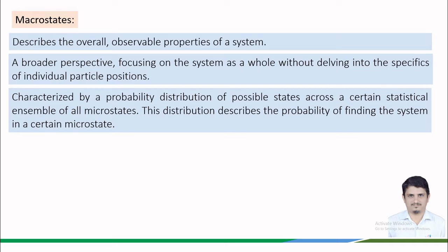A macrostate is characterized by a probability distribution of possible states across a certain statistical ensemble of all microstates. This distribution describes the probability of finding the system in a certain microstate. A macrostate describes the system in terms of macroscopic properties such as temperature, pressure, volume and energy. It represents a broader picture of the system focusing on overall characteristics rather than the microscopic details. A macrostate gives macroscopic description of a system. Two systems with the same values of macroscopic parameters are thermodynamically indistinguishable. A macrostate tells us nothing about the state of an individual particle.